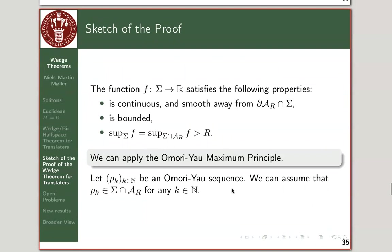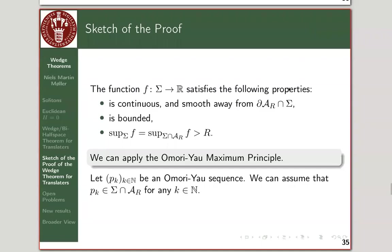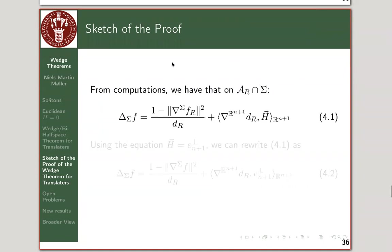We then apply the Omori-Yau maximum principle, obtaining an Omori-Yau sequence that behaves like an interior maximum but only in the limit of points, which may run off to infinity. We'll use the properties of this sequence throughout the argument — recall that it behaves like a maximum at an interior point. To continue the proof we need some basic hypersurface computations.